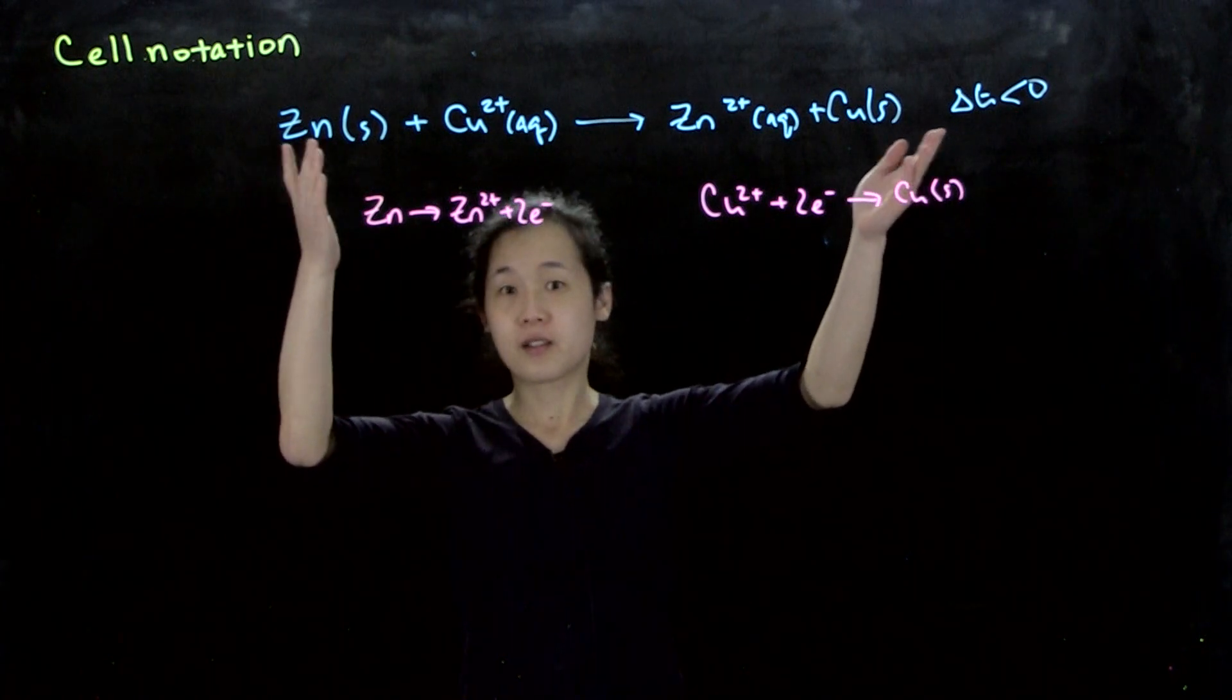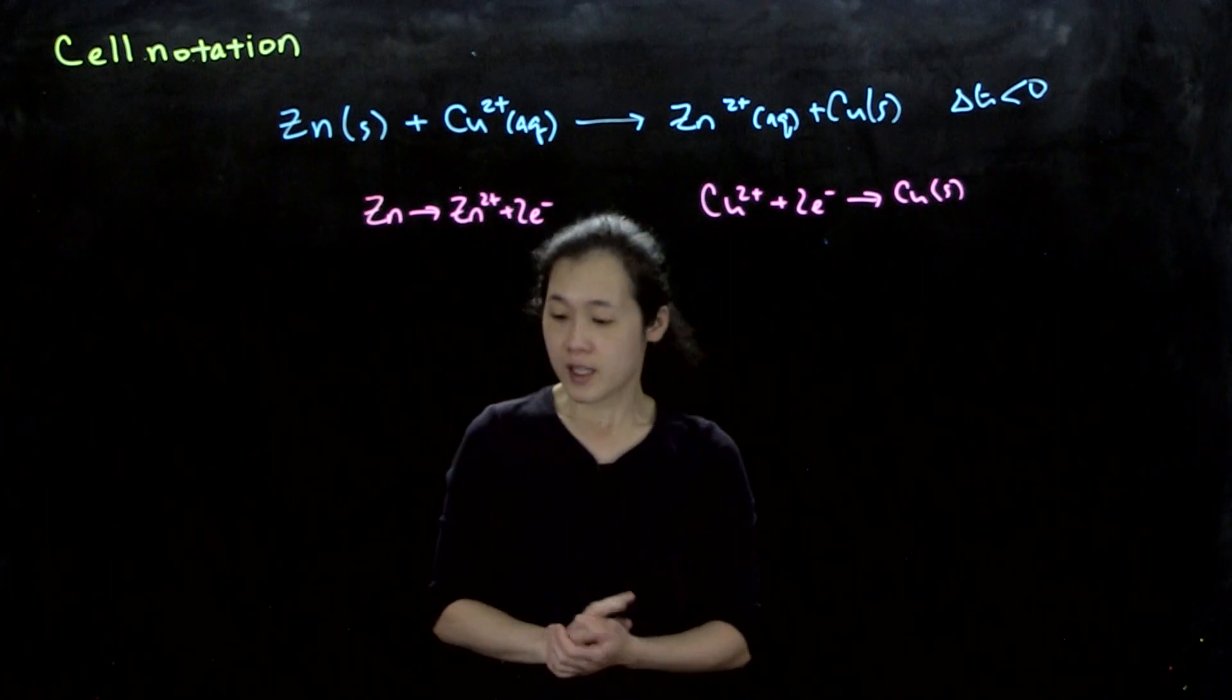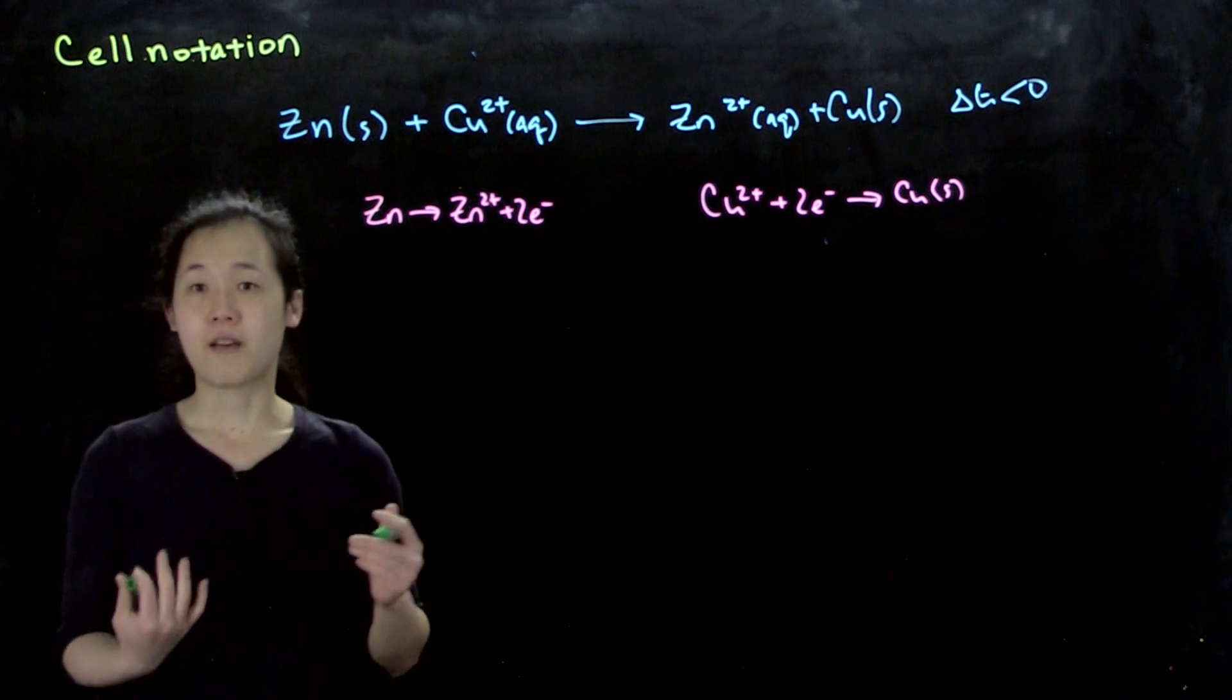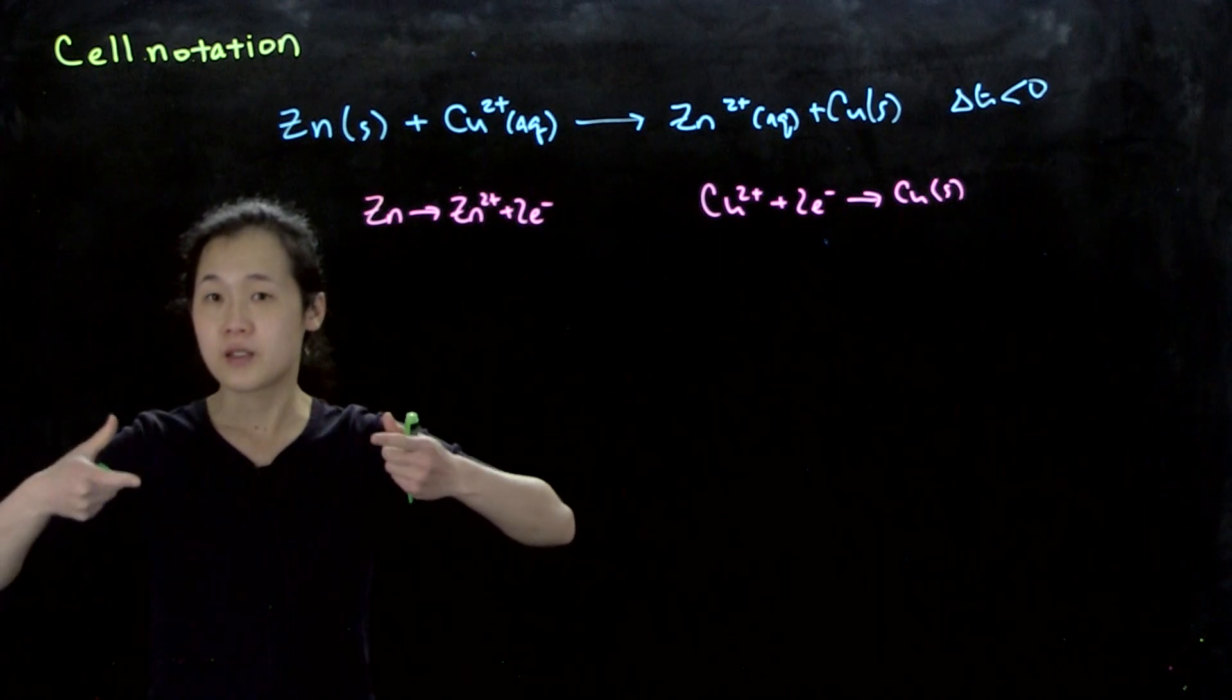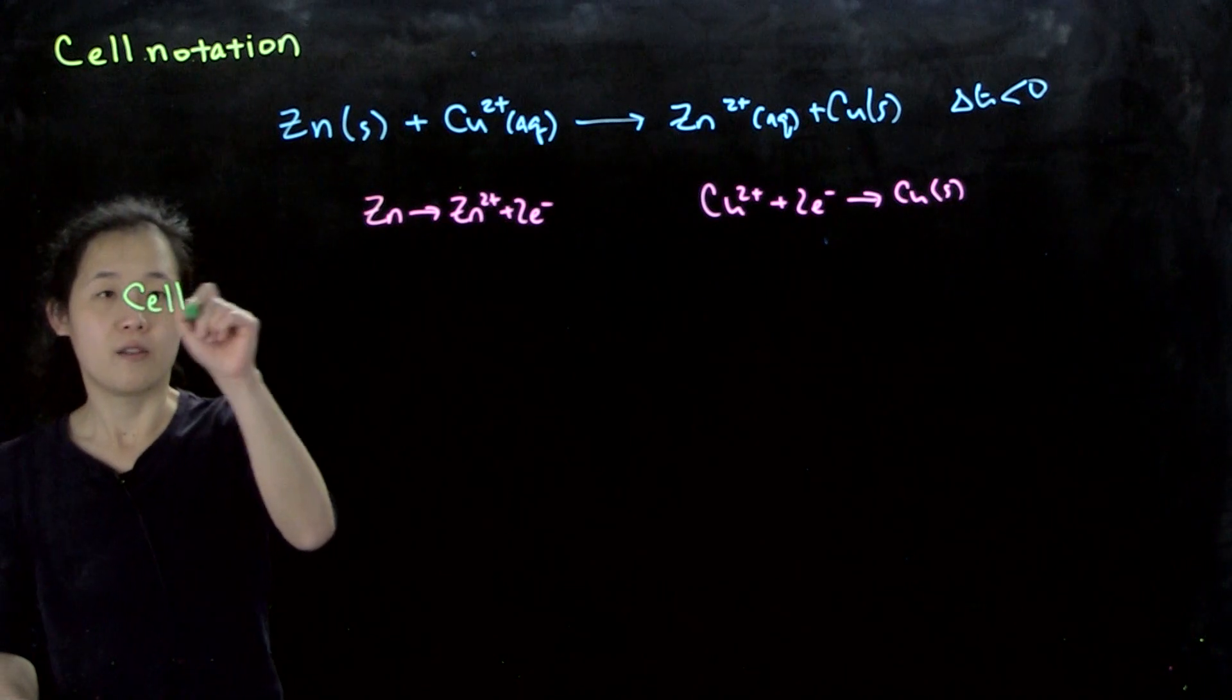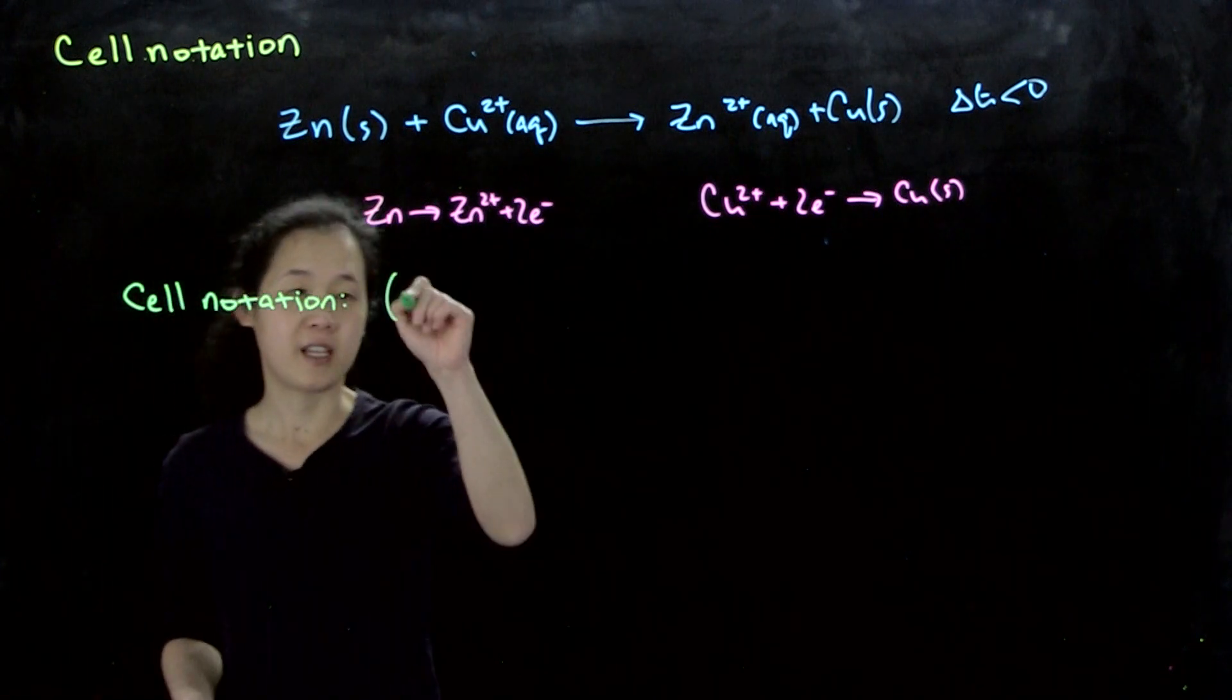This is cumbersome to write all the time and doesn't tell us everything about our cell. There is cell notation for describing the voltaic cell we drew in class, where we had zinc and copper electrodes in beakers of zinc sulfate and copper sulfate solutions. Rather than drawing out a whole cell every time, for voltaic cells,